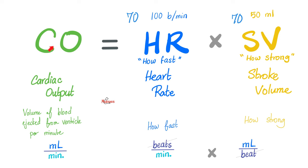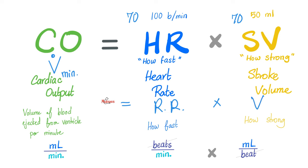Do you know the equation of cardiac output is exactly the same as the equation for minute ventilation for the lungs? Minute ventilation is how fast the lungs are breathing — the respiratory rate — times how much air comes in per breath, called the tidal volume. When you multiply tidal volume times respiratory rate, you get minute ventilation, which is equivalent to cardiac output. It's the same exact concept: how fast times how strong.